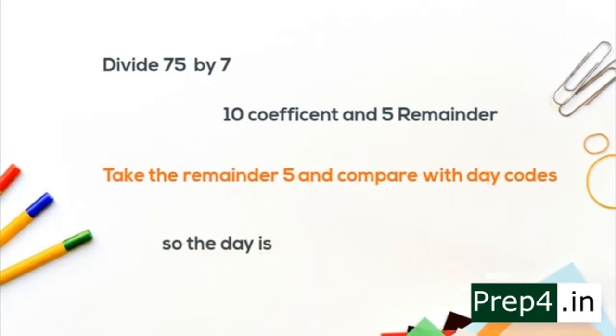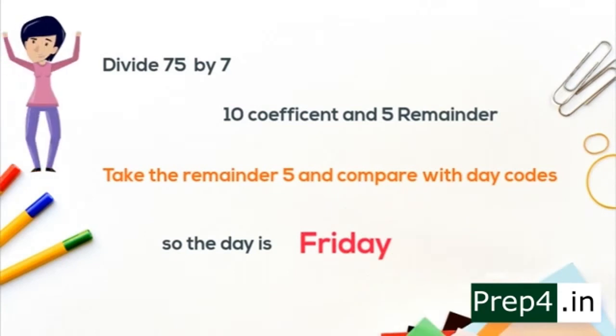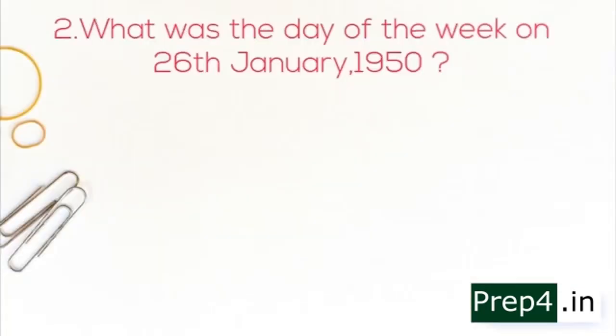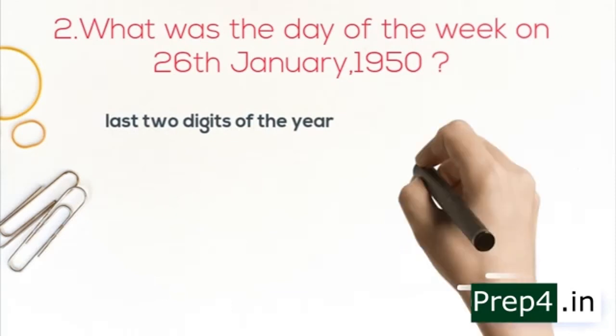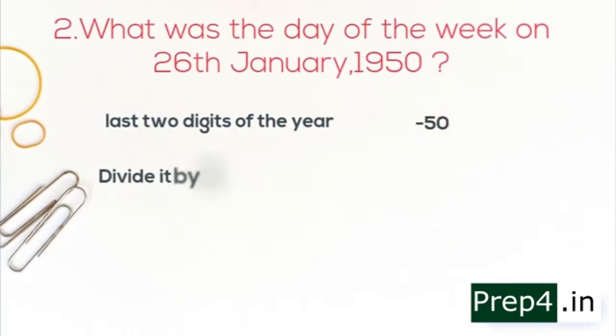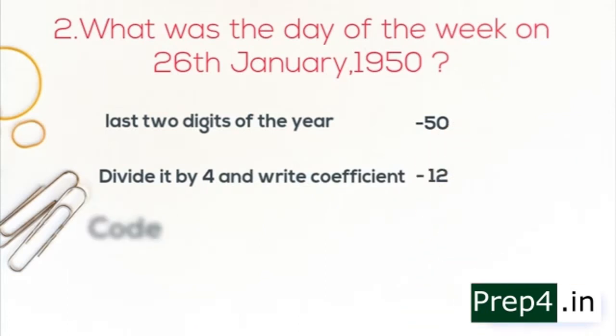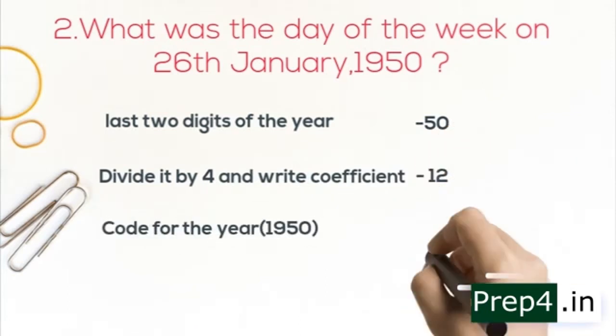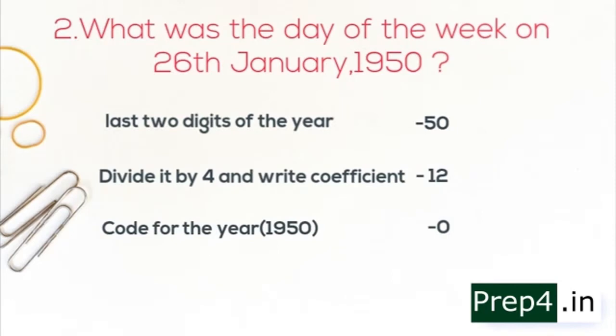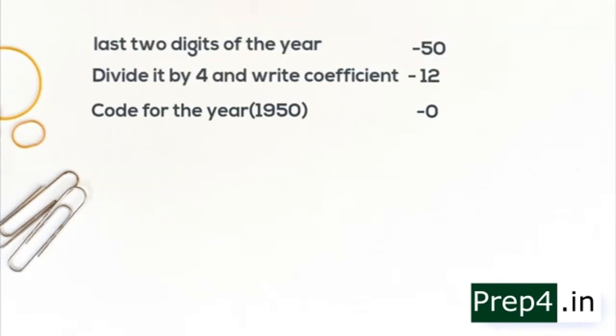To make this trick thorough, let's do one more question. The question is: What was the day of the week on 26 January 1950? So first, take last two digits of the year, that is 50. Divide it by 4 and write quotient, we will get 12. Code for the year 1950 is 0. Then let's take the date 26, then take code for the month January which is 0. Then let's add all values: 50 plus 12 plus 26 plus 0, we get 88.